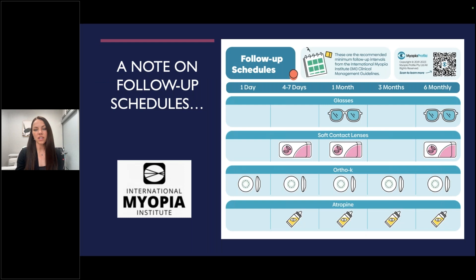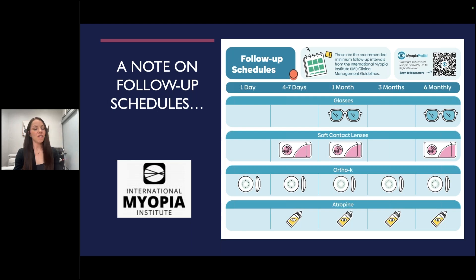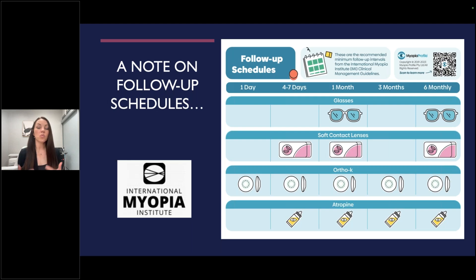A note on follow-up schedules: how often should we be seeing our kids? This is a summary recommended by the IMI, summarized by Myopia Profile, looking at when do we see kids back? It's really easy to just prescribe atropine and say see you in a year. The reality is when kids come back, we may see side effects we're not expecting, and contact lenses can have complications. If we finalize a lens in the first day of wearing them and don't see them back for three to six months, we can miss a complication. Furthermore, when it comes to appropriate follow-up — one of the mandates in the Canadian paper — we do need to see kids back a little more frequently in the beginning of a myopia control treatment.